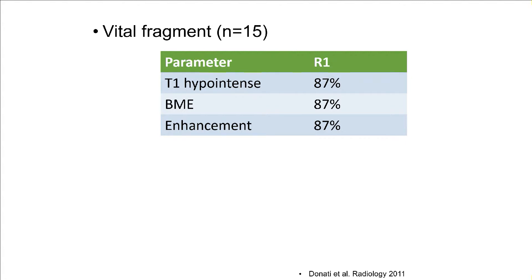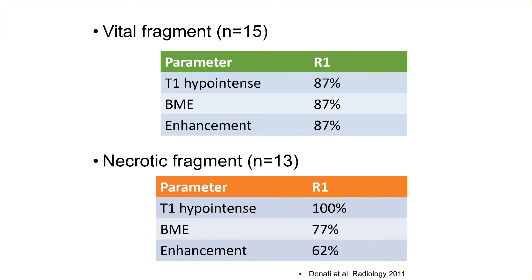When we look at bone marrow edema and enhancement, both were present in 87% of vital fragments, which makes sense. However, looking at the necrotic fragments: all of them were T1 hypointense — that still matches our expectations. But bone marrow edema was present in 77% of necrotic cases, and enhancement of these dead fragments was present in 62%.